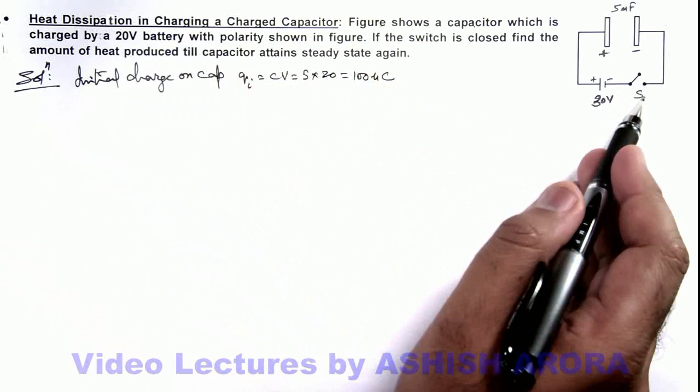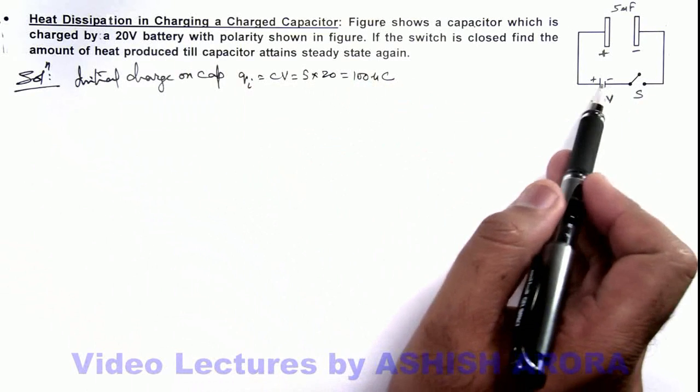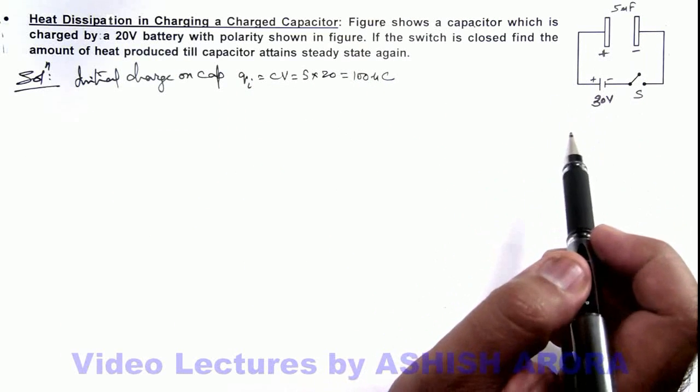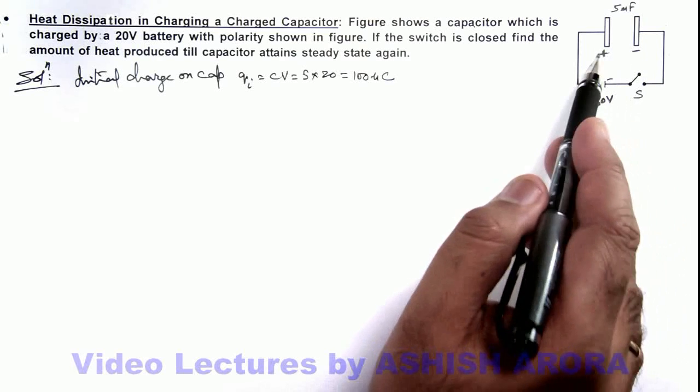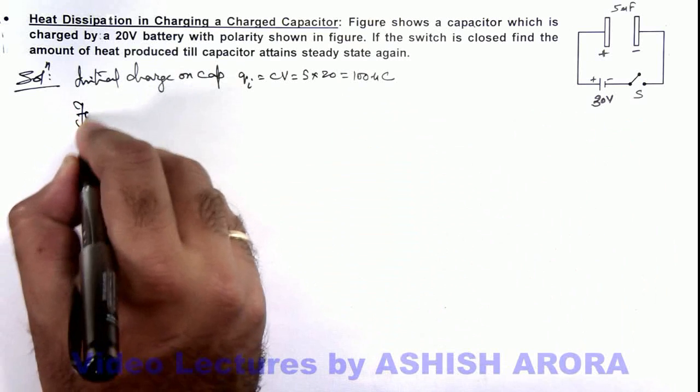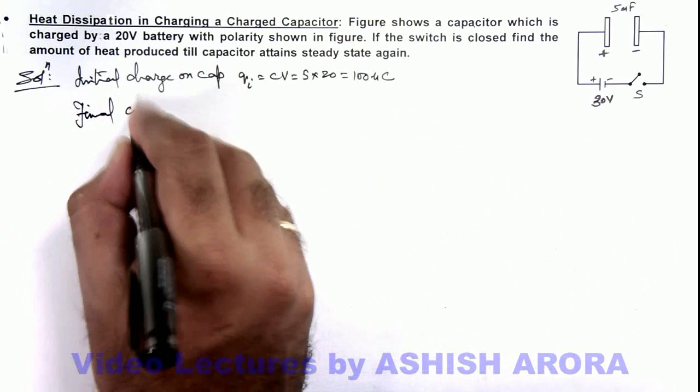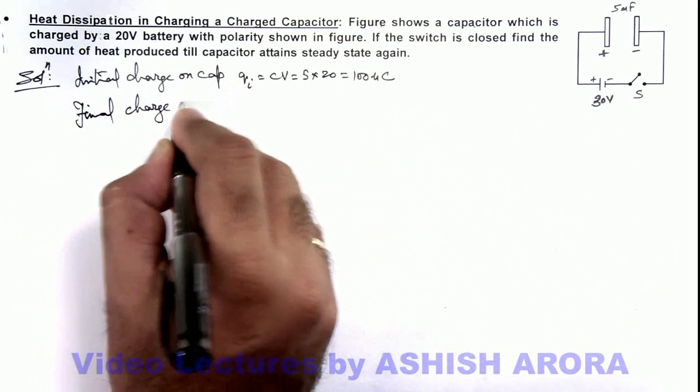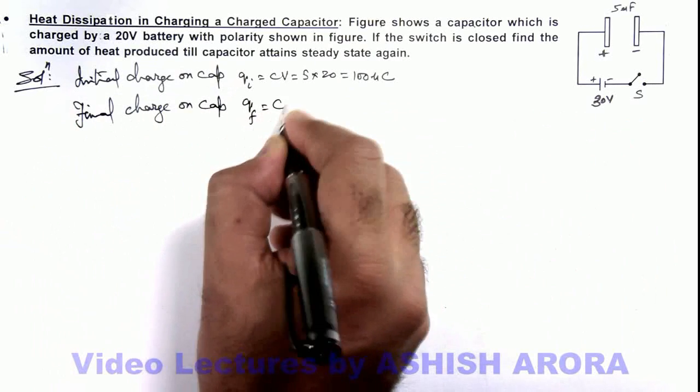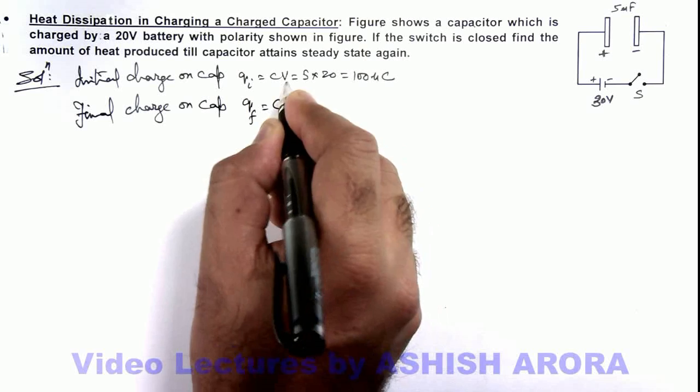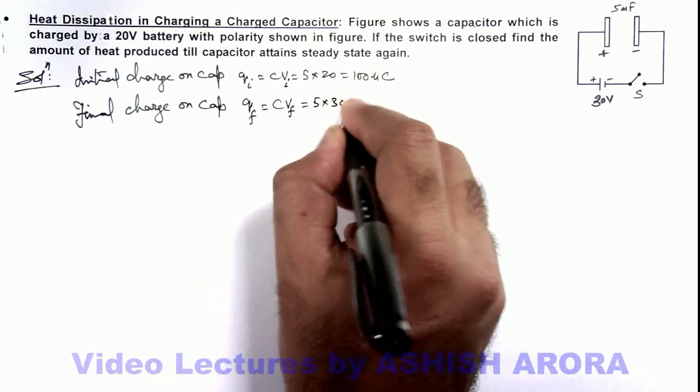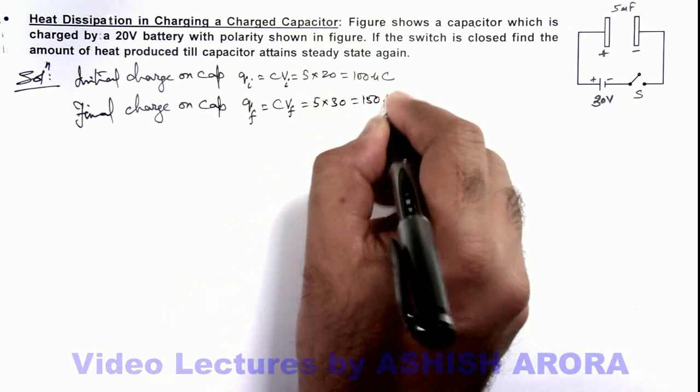And if we close down the switch, as the battery polarity is also of the same order in which the capacitor is connected, its polarity remains the same but the charge is increased to the new value of CV. So here we can write final charge on capacitor is Q_final, that is also CV. Here we can write this as V_final and V_initial. So this will be 5 multiplied by 30, that is 150 microcoulomb.